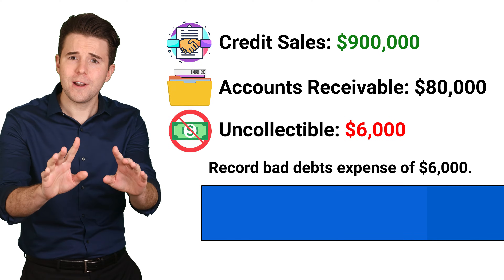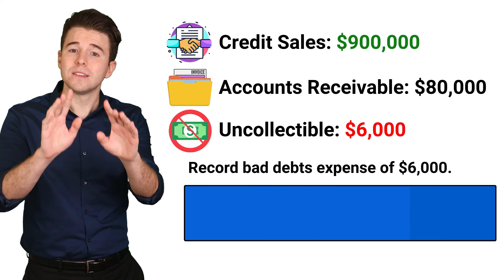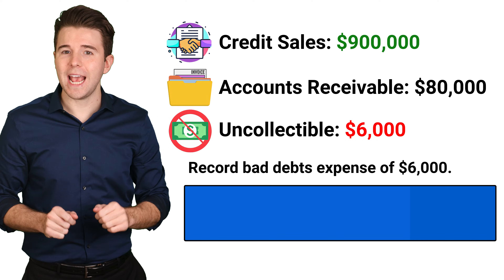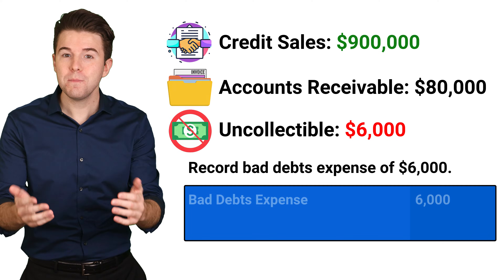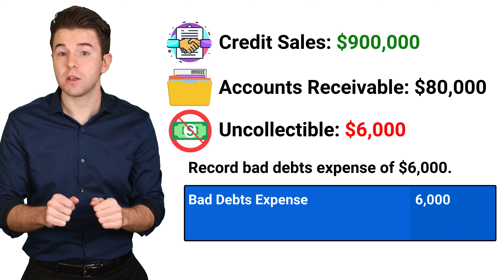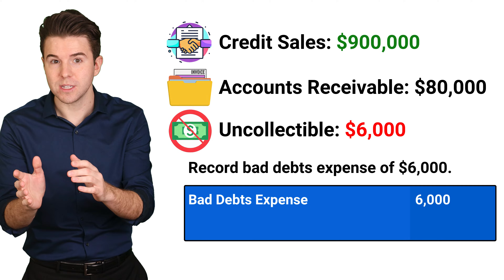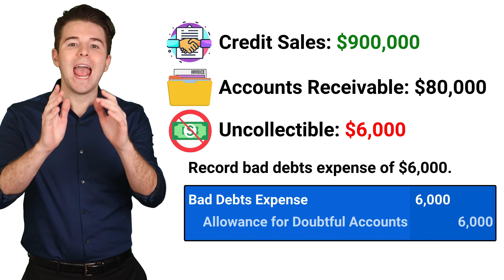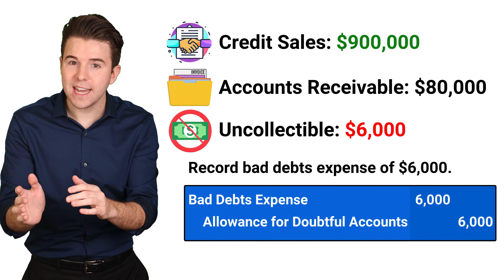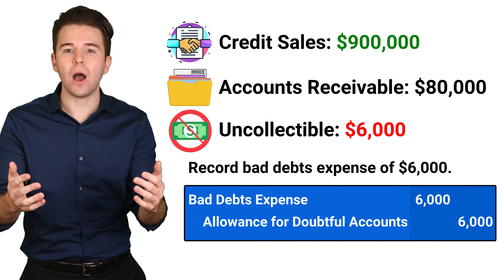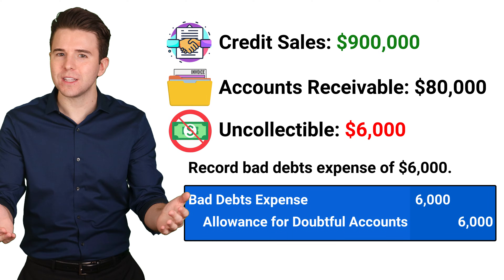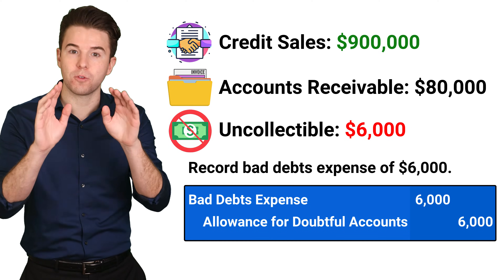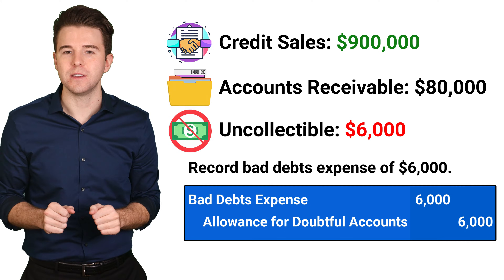But for now, let's record this estimate by debiting bad debts expense for 6,000, and crediting allowance for doubtful accounts for 6,000.